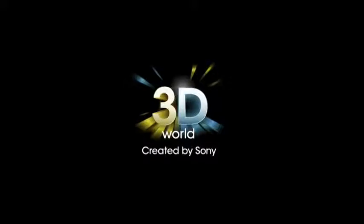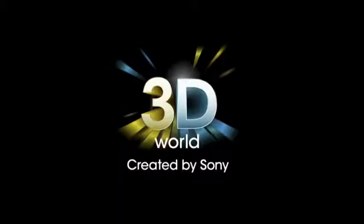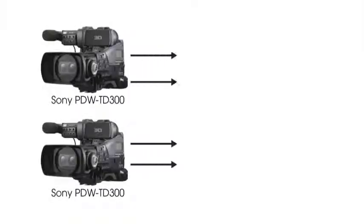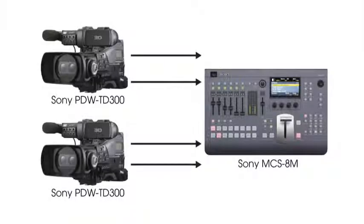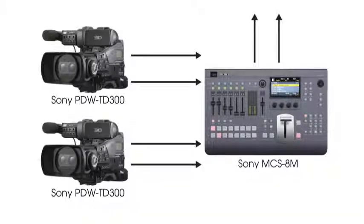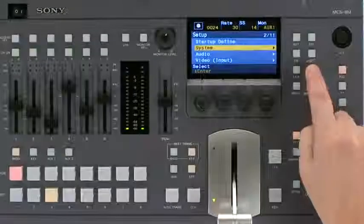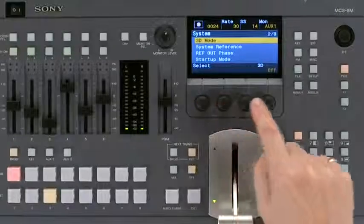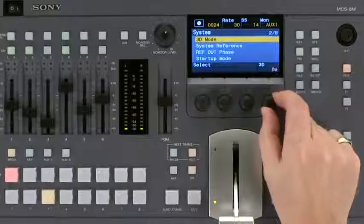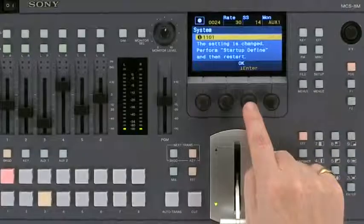When using 3D mode in the MCSATEM, the switcher will automatically tie inputs together. Inputs 1 and 2 become one left and one right, and so on. Consult the manual for connecting output settings. To set up 3D, go to Setup and select System, switch 3D to ON. The switcher will need to be restarted.